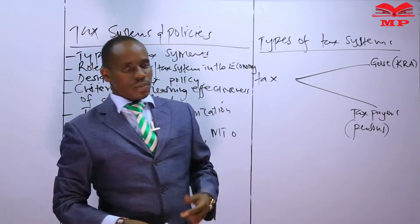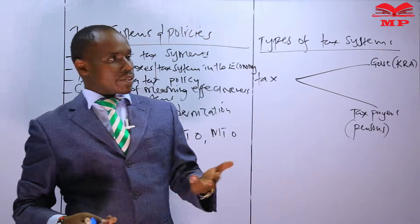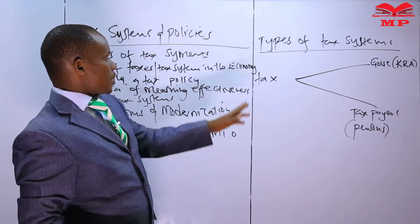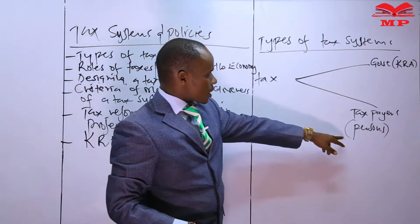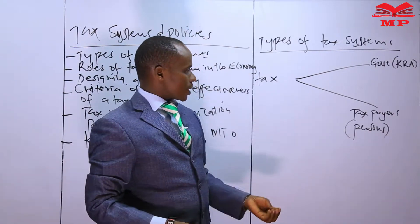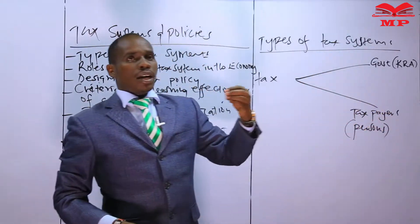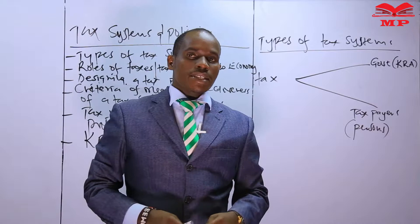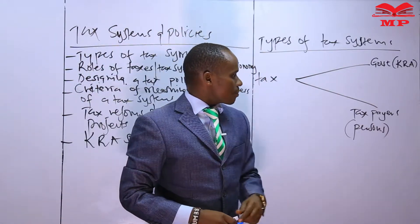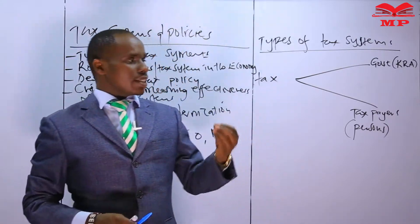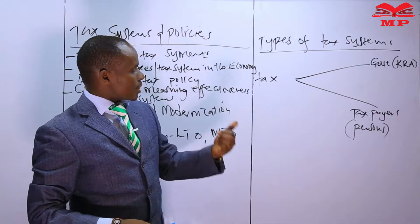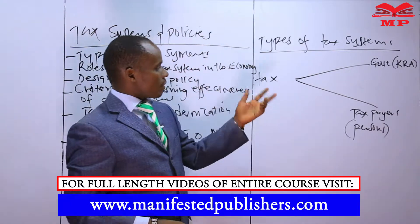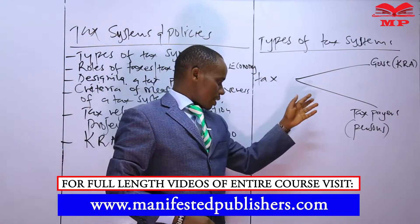The government uses that money to execute some of its functions, like development and provision of public services. Tax is an amount paid by taxpayers — persons who are either individuals or companies — to the government. Note that you do not see the government collecting tax directly, because the government has established an agent known as the Kenya Revenue Authority, an agency established for the purpose of raising tax revenue.